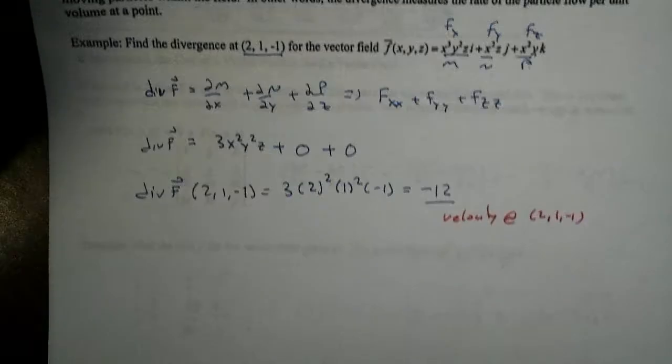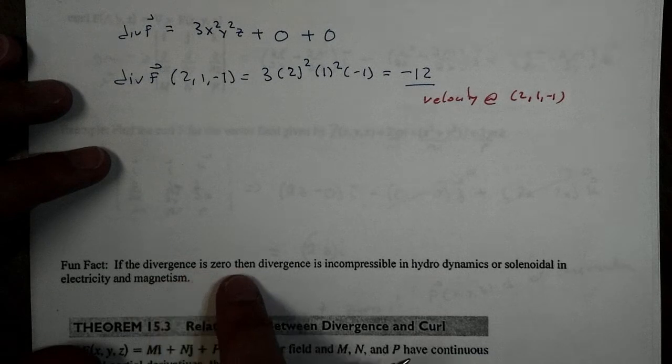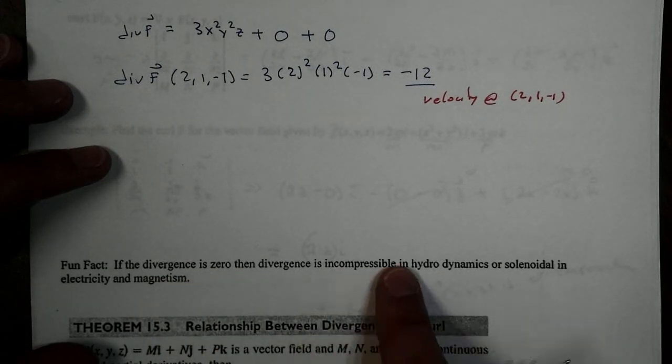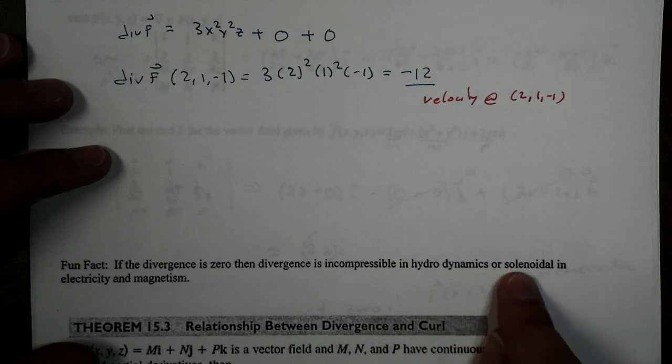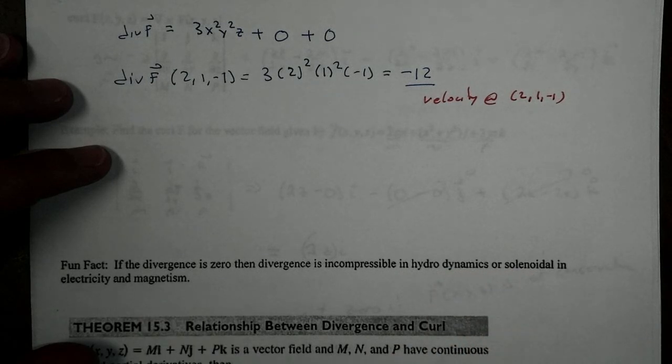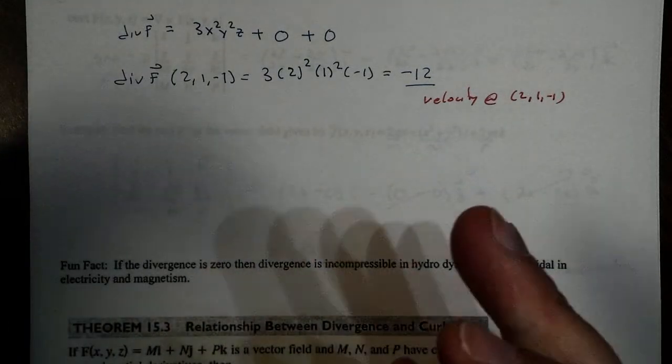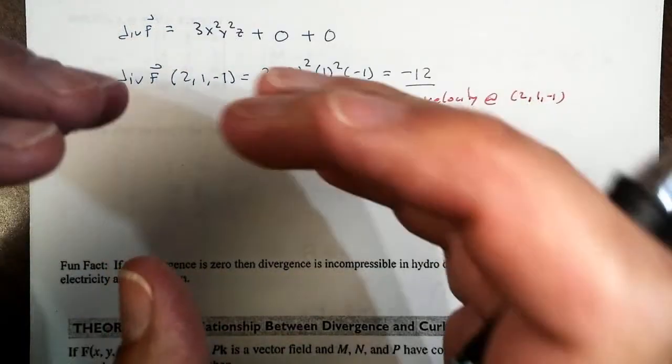So, a couple fun facts. If the divergence is zero, then the divergence is what we call incompressible in hydrodynamics and solenoidal in electricity and magnetism. So, we can't compress anymore or it's not rotating or it's not moving.